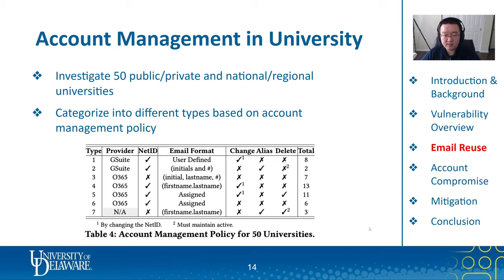We also investigated the account management policy adopted by 50 universities. We find that 32 universities allow students to change their email address by modifying their net ID. 14 universities immediately delete students' email addresses right after they graduate from the school. Two universities keep their email addresses as long as these emails are active. In total, we find that 68% of universities adopt account management policies that are vulnerable to the inconsistency threat.